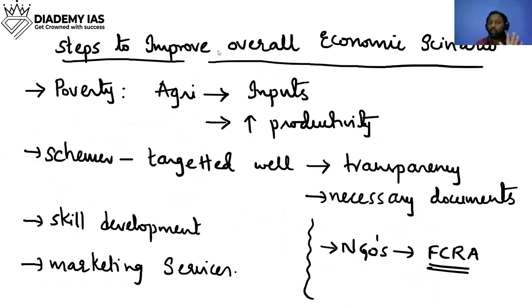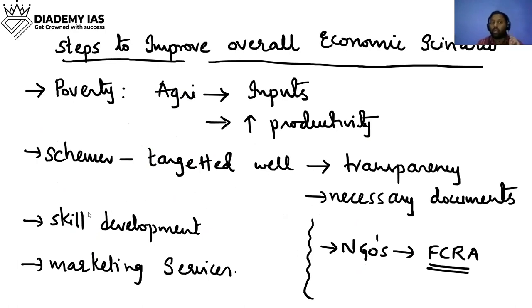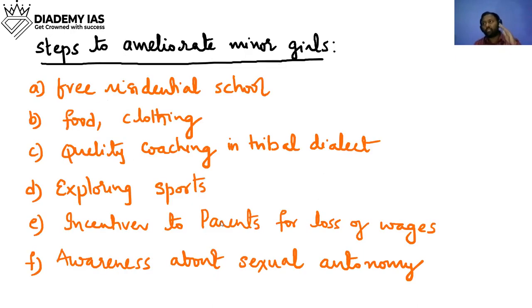To improve the overall economic scenario, you need to improve agriculture by providing inputs and increasing agricultural productivity so it moves from subsistence to profitable farming. Ensure all relevant government schemes reach the people. Apart from that, provide skill development and marketing services to generate additional income — only then can you expect parents to stop sending their minor girls to other places.